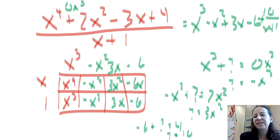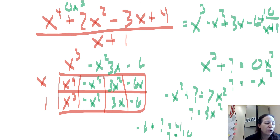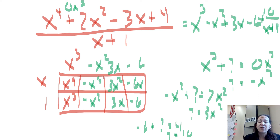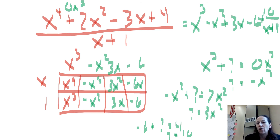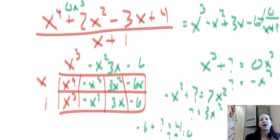That is how to do polynomial division using the area model, and mostly it just takes some practice. Synthetic division is easier and faster for some problems, but it's very limited in when you can use it. The area model works for all kinds of polynomial division at all levels of difficulty at all times, and it doesn't ever get harder — and it's a lot easier than the long division process. That's the lesson and I hope this helps — you should be set to make a good faith effort on your homework.